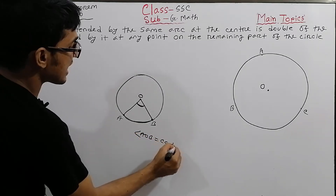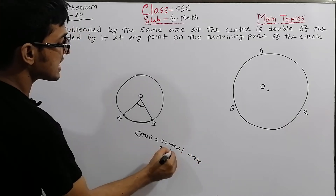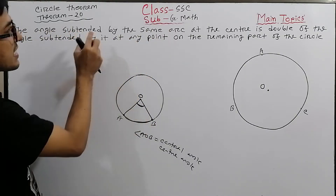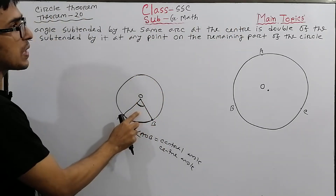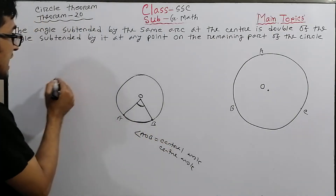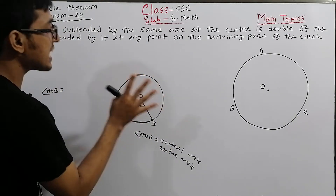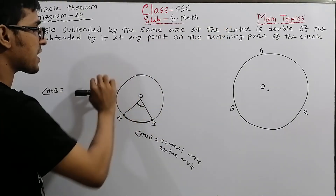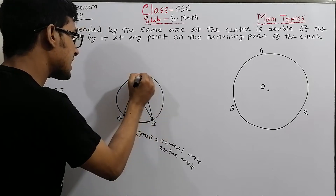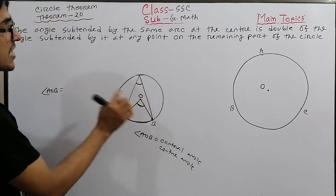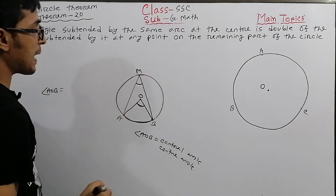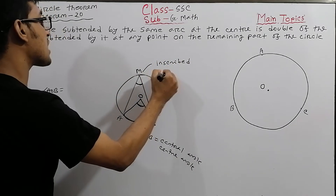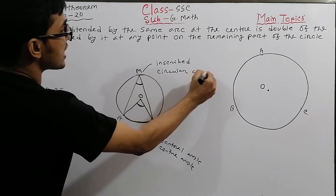We have a central angle, which is the angle at the center of the circle subtended by the arc. We also have an inscribed angle — the angle created at any point on the remaining part of the circle subtended by the same arc. The inscribed angle is also called a circular angle.